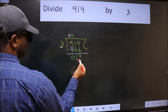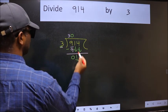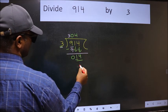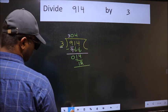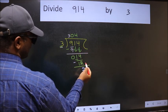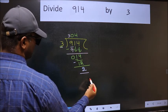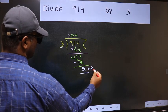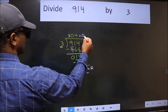Now 14, a number close to 14 in the 3 table is 3 times 4 is 12. Now we should subtract. We get 2. No more numbers to bring down, so we stop here. This is our remainder and this is our quotient.